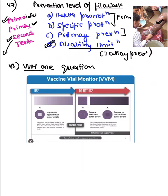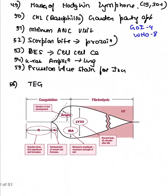A question on vaccine vial monitor (VVM) was asked. The VVM has a larger outer circle and smaller inner square — as long as the inner square is lighter than the outer circle, the vaccine is safe to use. When it becomes darker, discard the vaccine. Hodgkin lymphoma markers: CD15 and CD30 positive. CML shows a garden-party appearance — many cells crowding together.